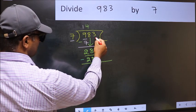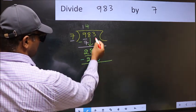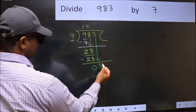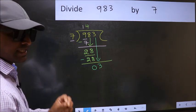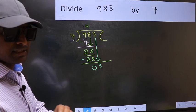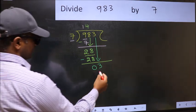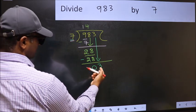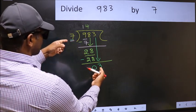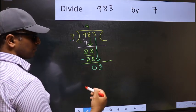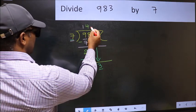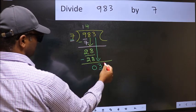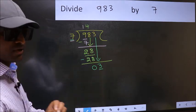After this, bring down the beside number. So 3 down. After this step, the mistake happens. Here we have 3 and here 7. 3 is smaller than 7. So what many do is they directly put dot and take 0, which is wrong.